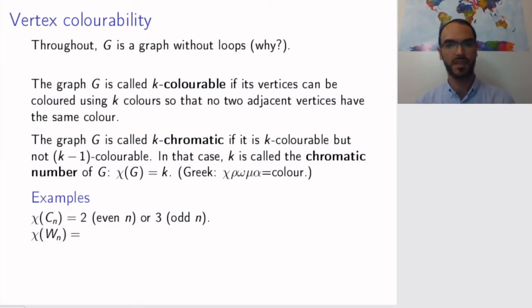How about the wheel graph? Pause and think. Well, the wheel graph is the same story as the cycle graph. We have this cycle and we have this vertex in the middle that is adjacent to everything. Of course, in this case, I'm excluding the trivial cases with just one vertex. I'm talking about large n or n at least 3.